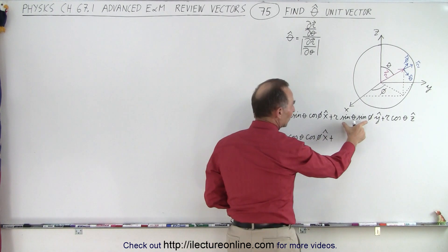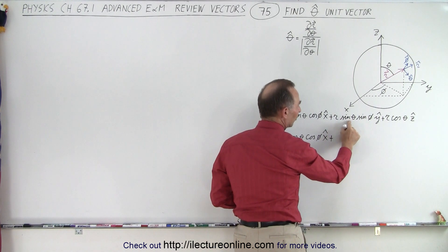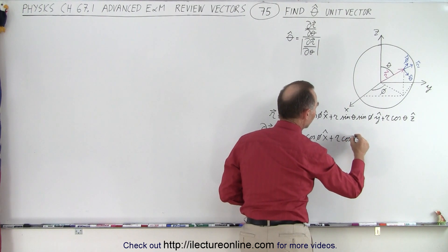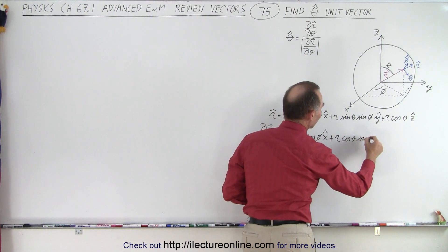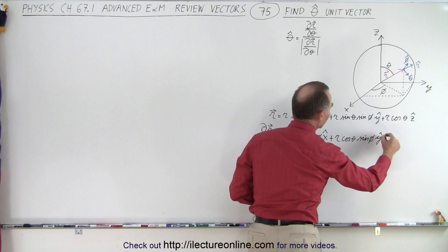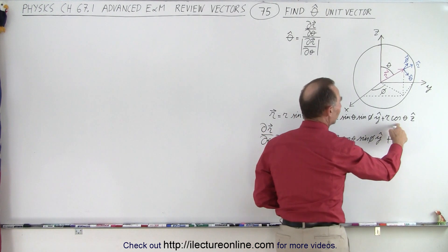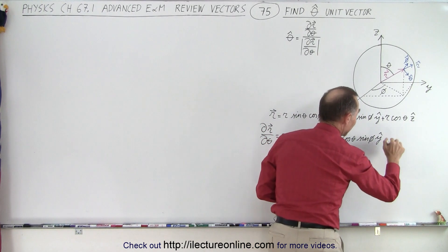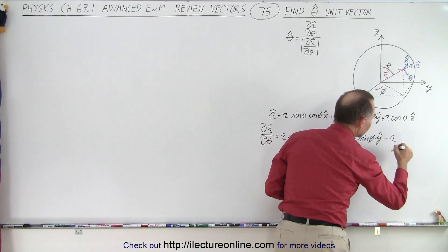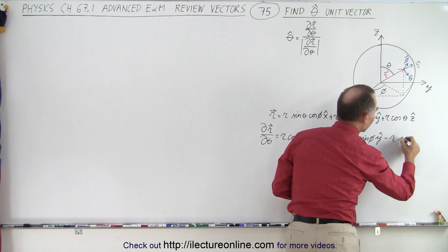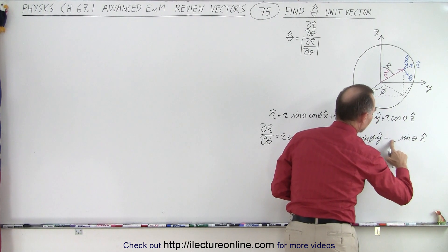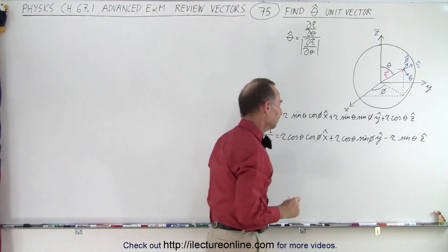Plus, we take the derivative with respect to theta of the y component — the derivative of sine is also cosine — so we get r times cosine of theta times sine of phi in the y direction. Then the derivative of cosine of theta becomes negative sine, so we get negative r times sine of theta in the z direction.